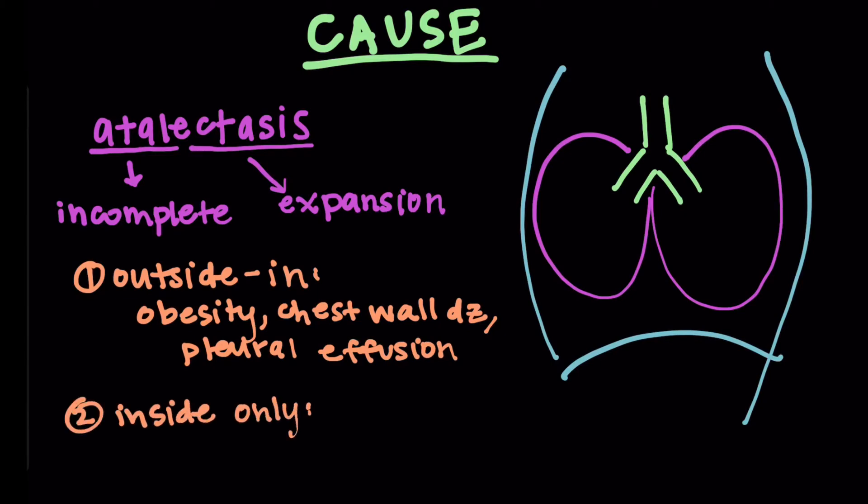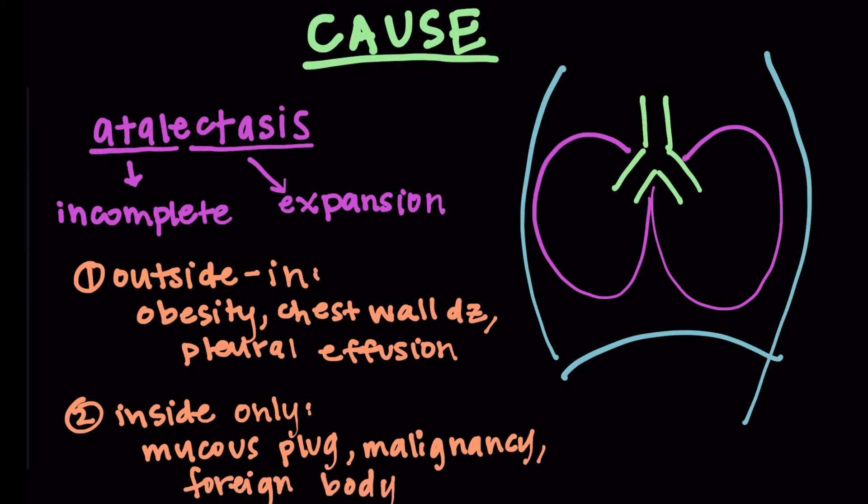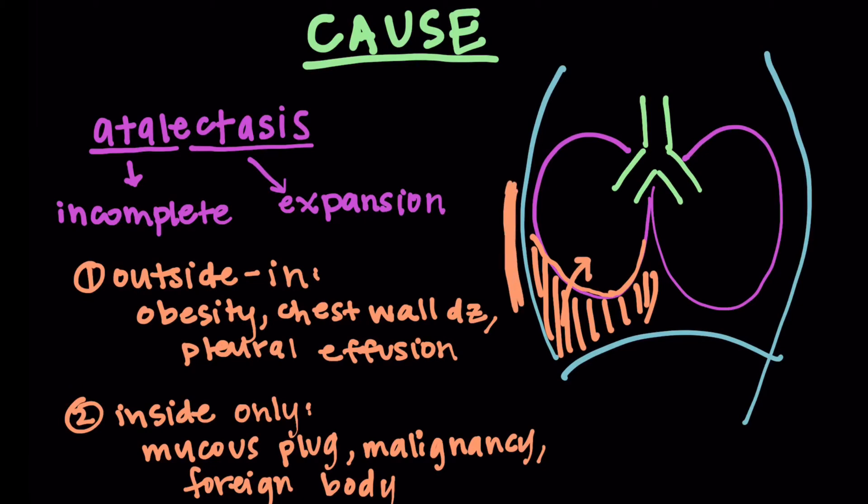Inside only, things like a mucus plug, something in that airway. Malignancy, a cancer in the airway. Or a foreign body, like if a kid aspirates a piece of corn or something like that. So there's my drawing. My little pleural effusion is going to put pressure going in. That's that wall, obesity. And then there's your mucus plug there. They're all going to want to make the lung collapse.